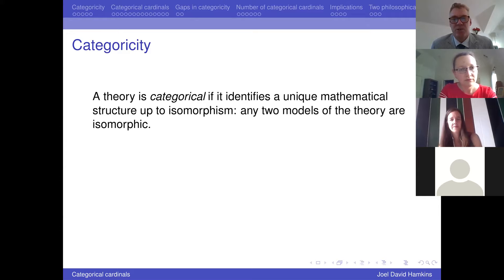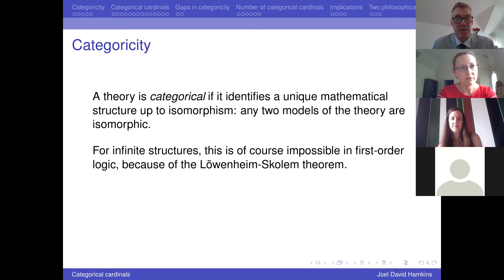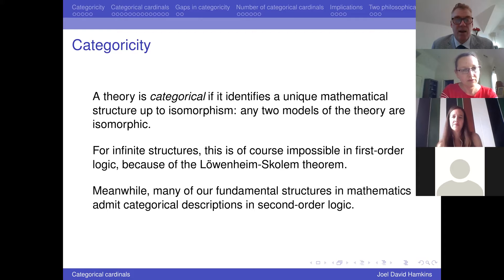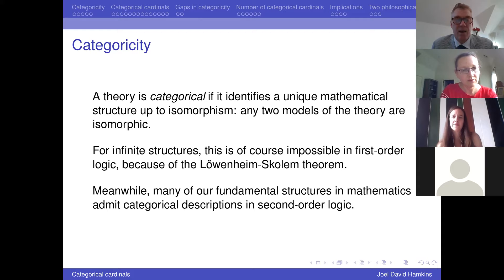I want to begin just by talking generally about categoricity. A theory is categorical if it identifies a unique mathematical structure up to isomorphism — in other words, any two models of the theory are isomorphic. For infinite structures, that's impossible if your theory is a first-order theory because of the Löwenheim–Skolem theorem: you'll always have models of arbitrarily large cardinality by the upward Löwenheim–Skolem theorem.